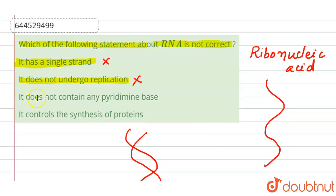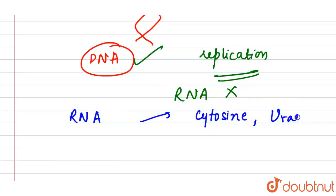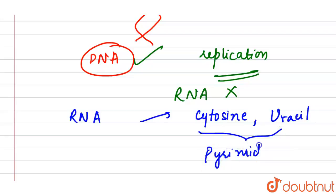The next statement is: RNA does not contain any pyrimidine base. This statement is not correct, so this will be our answer — this is the incorrect statement. If we talk about the nitrogenous bases present in RNA, we have cytosine and uracil as the pyrimidine bases.